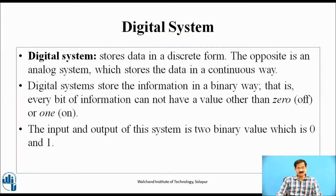Digital System. A digital system stores data in discrete form. As discussed earlier, the opposite is an analog system which stores data in a continuous way. A digital system stores information in a binary way — that is, every bit of information cannot have a value other than 0 or 1, or off or on. The input and output of this system are two binary values, which are 0 and 1.